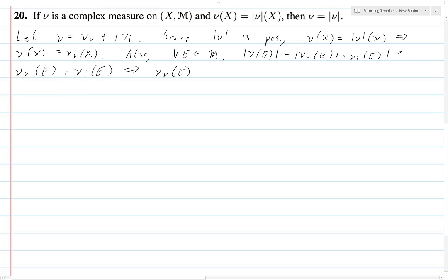So anyways, subtracting this is fine. And so, ν_r of e is less than or equal to the value of ν of e minus ν_i of e. But this is obviously going to be less than or equal to |ν| of e.